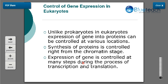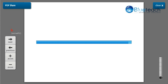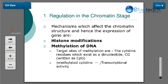Moving to the next slide: regulation at the chromatin stage. As mentioned, the chromatin stage is a very initial stage. Regulation at this stage is carried out by histone modifications and methylation of DNA. Histone modifications and their role in transcriptional activation have been dealt with in detail in another video presentation already uploaded to YouTube. Here I will be discussing methylation of DNA.